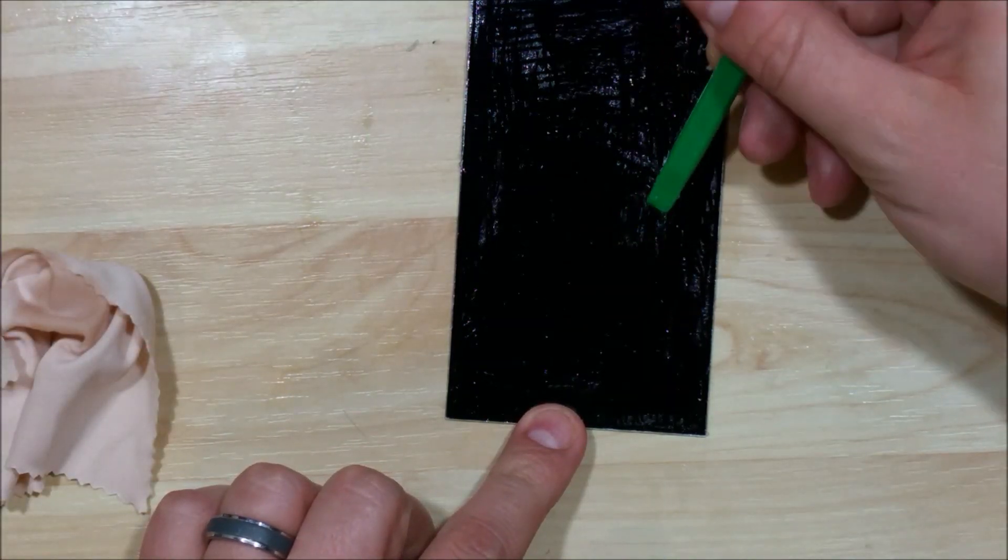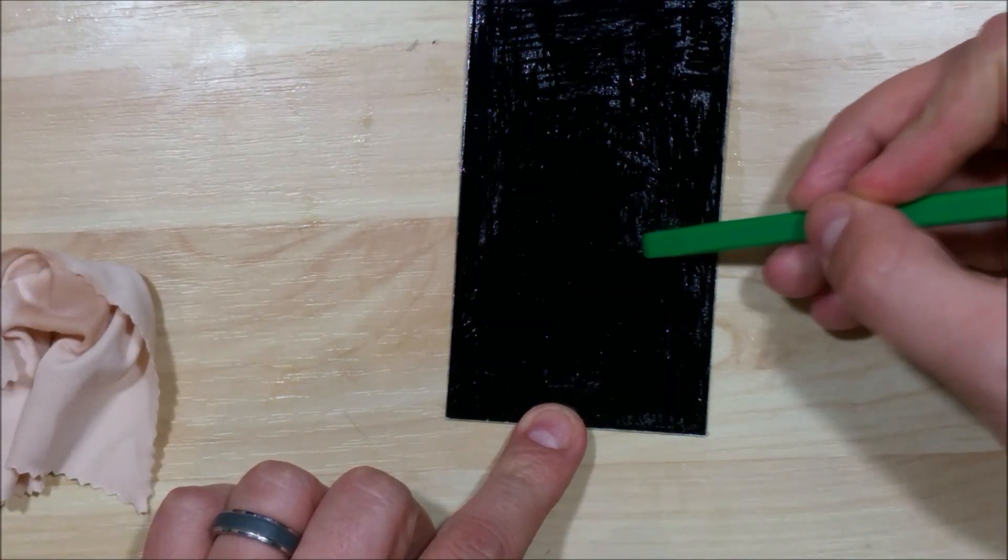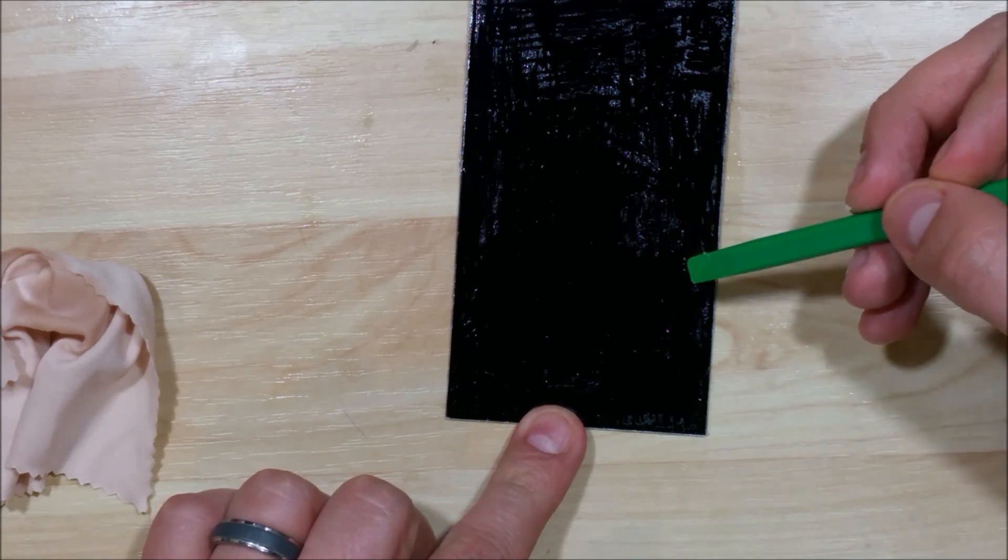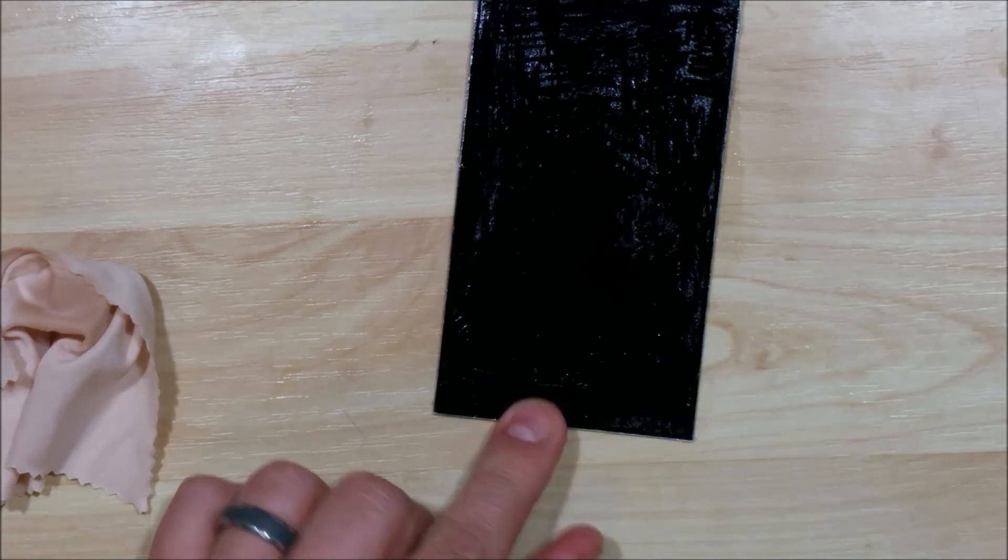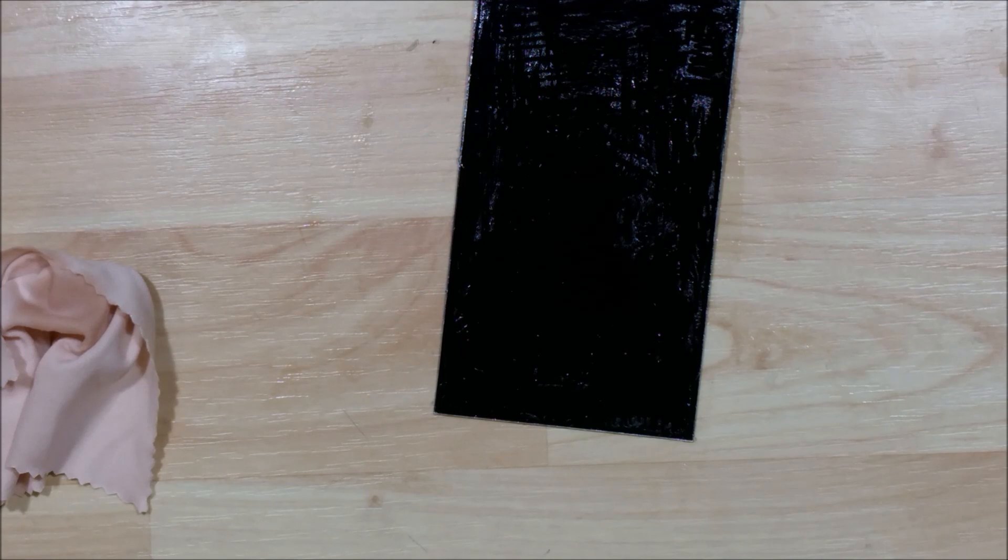So we may have to take our spudger here and on the high points of the glue just go ahead and scrape it a little bit. Now I'm not putting a lot of force on my scraper. Basically all I'm doing is just sliding it over it a little bit trying to get the glue to spread around a little bit so it's easier to remove.